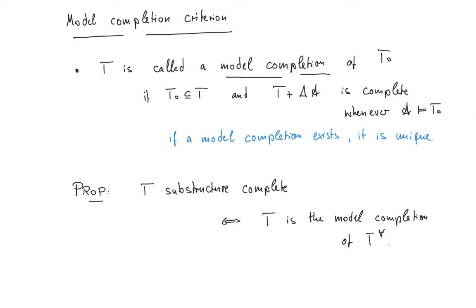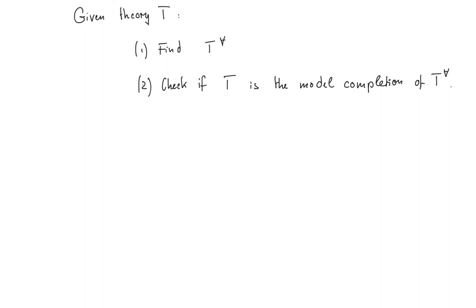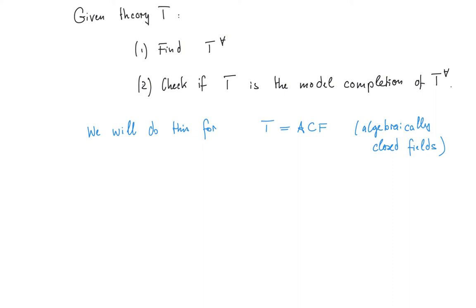As with all the propositions listed so far, you should go ahead and try to prove them. Most proofs are not very hard — they essentially just chase through the definitions. Some, like Robinson's test, are a little bit more complicated; if you get stuck, you can find a proof in many standard texts on model theory. In general, one procedure to test for quantifier elimination is: first, given a theory T, find its universal part; then check if T is the model completion of that universal part. We will do this process now for the theory of algebraically closed fields, or ACF.